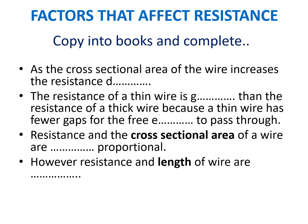This needs to be copied and completed into your book. Pause the video now and copy out the sentences, then press play to check whether your answers are correct. It should read: as the cross-sectional area of the wire increases, the resistance decreases. The resistance of a thin wire is greater than the resistance of a thick wire, because a thin wire has fewer gaps for the free electrons to pass through. Resistance and the cross-sectional area of a wire are inversely proportional.